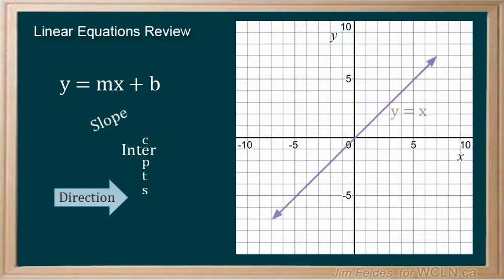Starting with the most basic equation, y equals x, we get a line that crosses through the point zero zero, and rises up and runs to the right in equal steps.